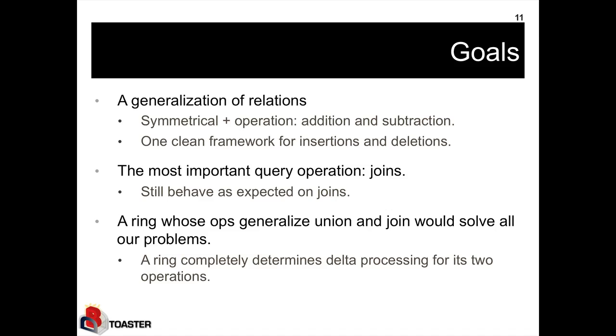In this video, the goal is to create a generalization of relations with a symmetrical plus operation that allows both addition and subtraction. So this will be one clean framework for insertions and deletions. We will not forget that our probably most important operation is joins, and we want to have our modified algebra of relations to still behave as expected on joins. So the desired thing is actually to create a ring whose operations generalize union and join, because that would solve all our problems. In particular, such a ring would completely determine delta processing for its two operations.